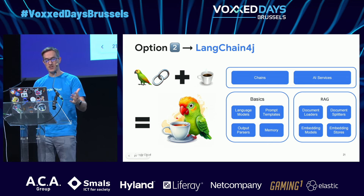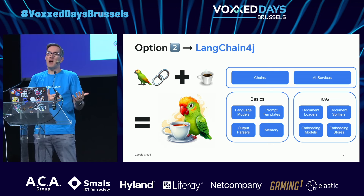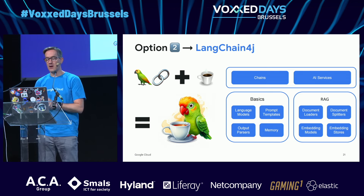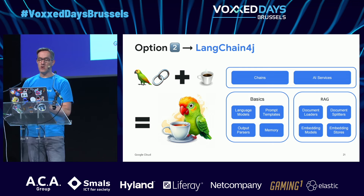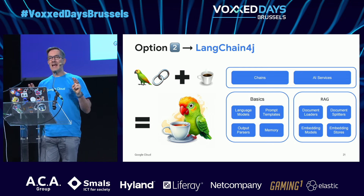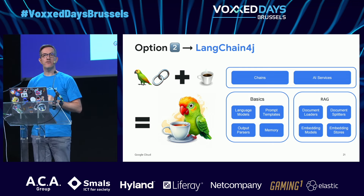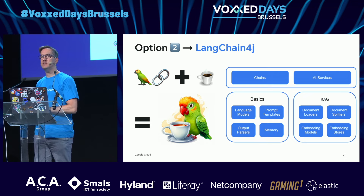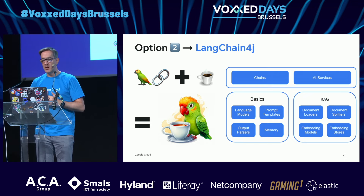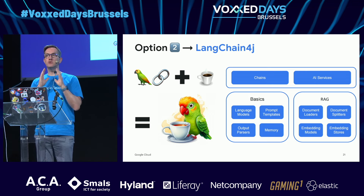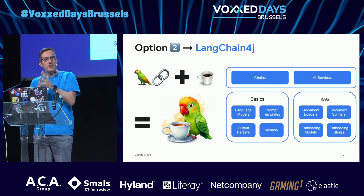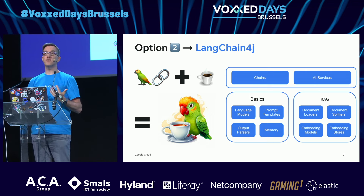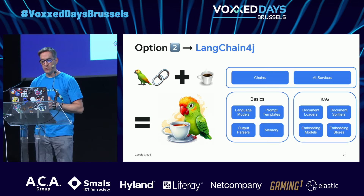LangChain4J has a nicer logo than LangChain, which is the Python project that inspired it. LangChain4J is an LLM orchestrator framework that allows you to work with different language models, embedding models, and vector databases — particularly for retrieval augmented generation. It includes document splitters to split documents into chunks and create vector embeddings.